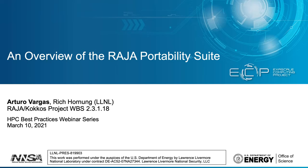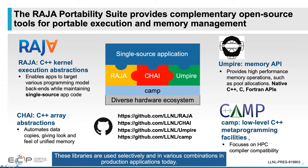I'm here on behalf of the Raja Portability Suite team to provide an overview of the different technology we've been developing. The Raja Portability Suite is a collection of modular open source tools for developing single source portable codes. There are four main projects: Raja, an abstraction layer for portable kernels based on loop level parallelism; Umpire, an API-agnostic tool for memory allocations on host and device; Chai, an array-like object automating data movement between host and device; and Camp, offering low-level metaprogramming methods for HPC compiler compatibility. All projects are hosted on GitHub.